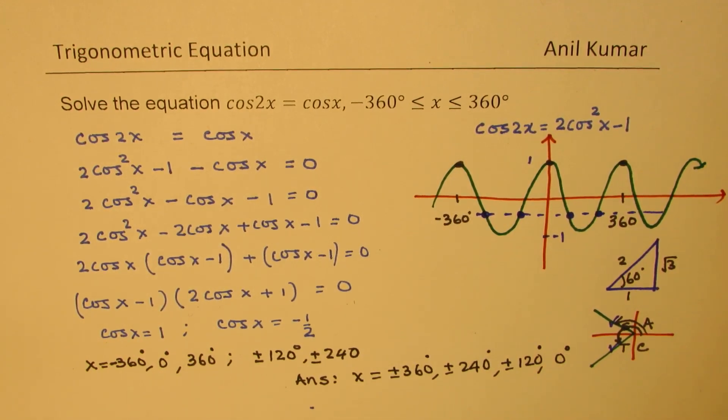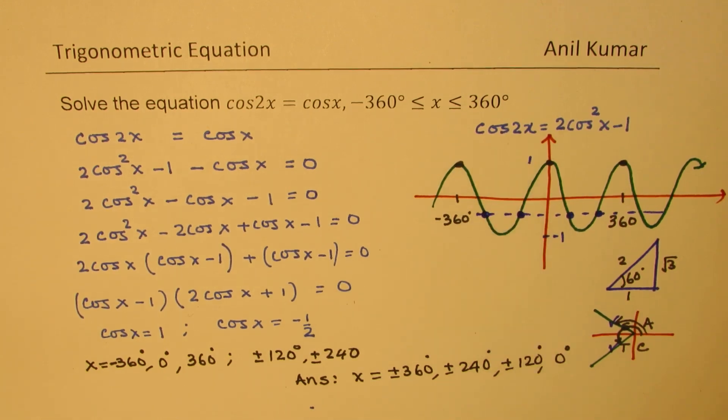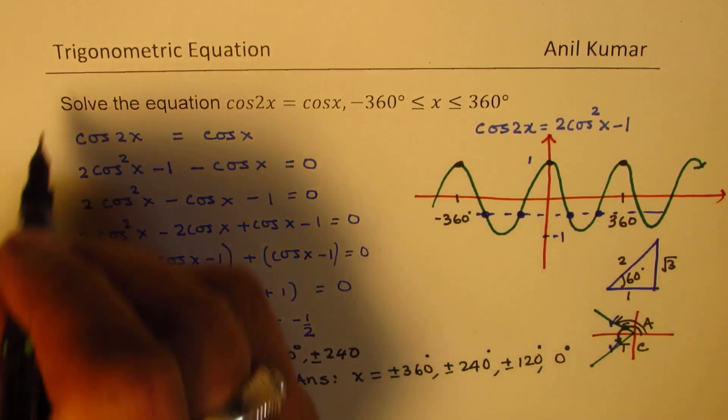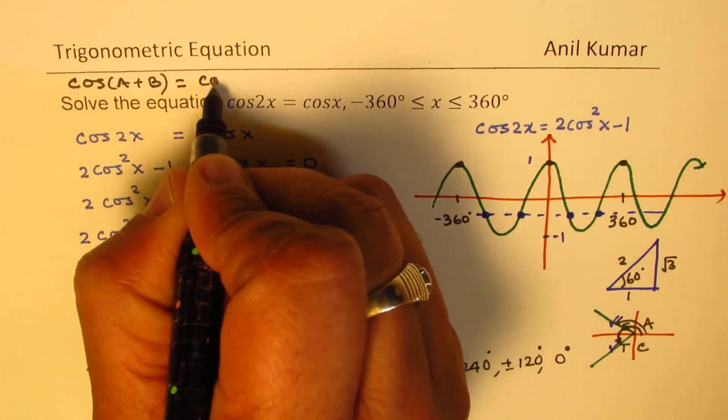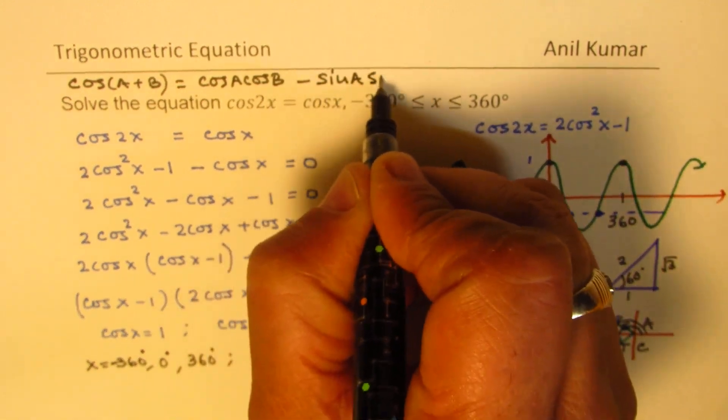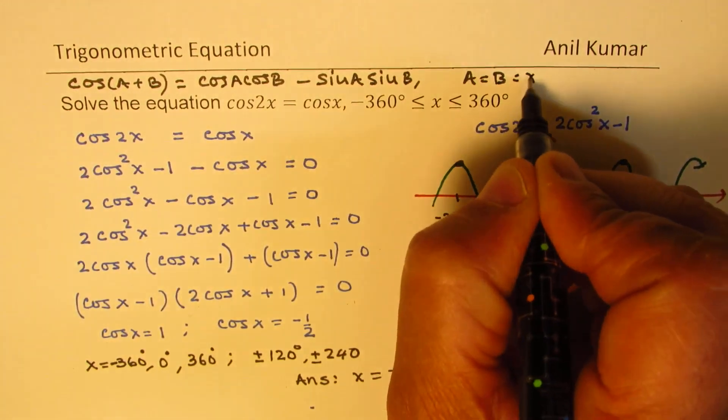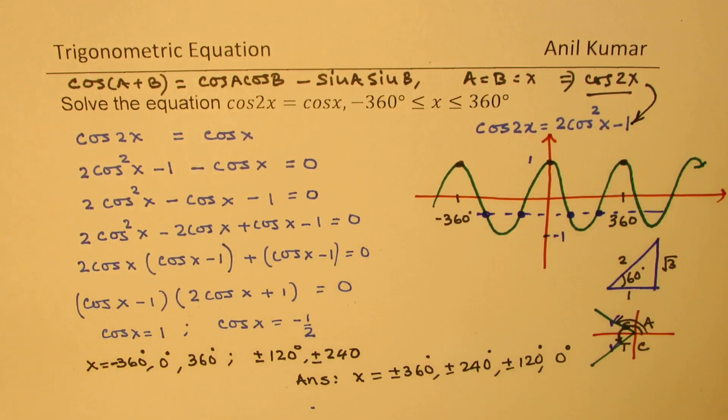So that is the method of solving this. I hope all the concepts are absolutely clear. Now for this formula, you can look into the link provided, where we have shown the derivation. This can be derived from the double angle formula, can be derived from cos(a plus b), which equals cos a cos b minus sin a sin b. So if you equate a equals b equals x, you will get cos 2x. And from there, you could derive this particular formula, a standard formula which can always be used.